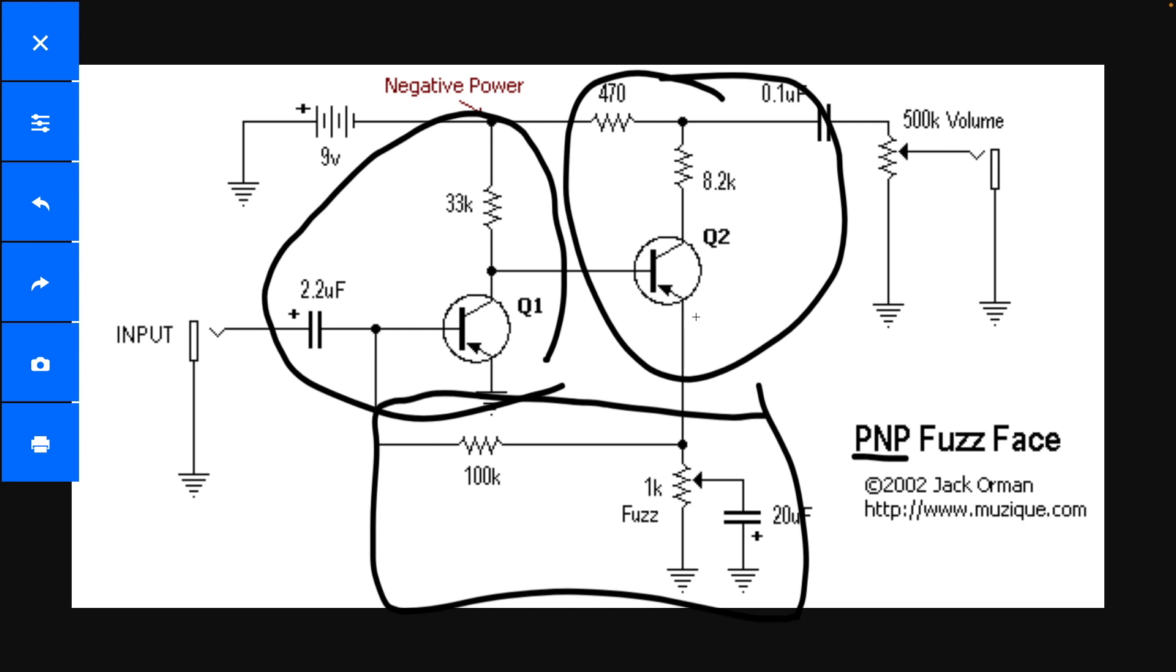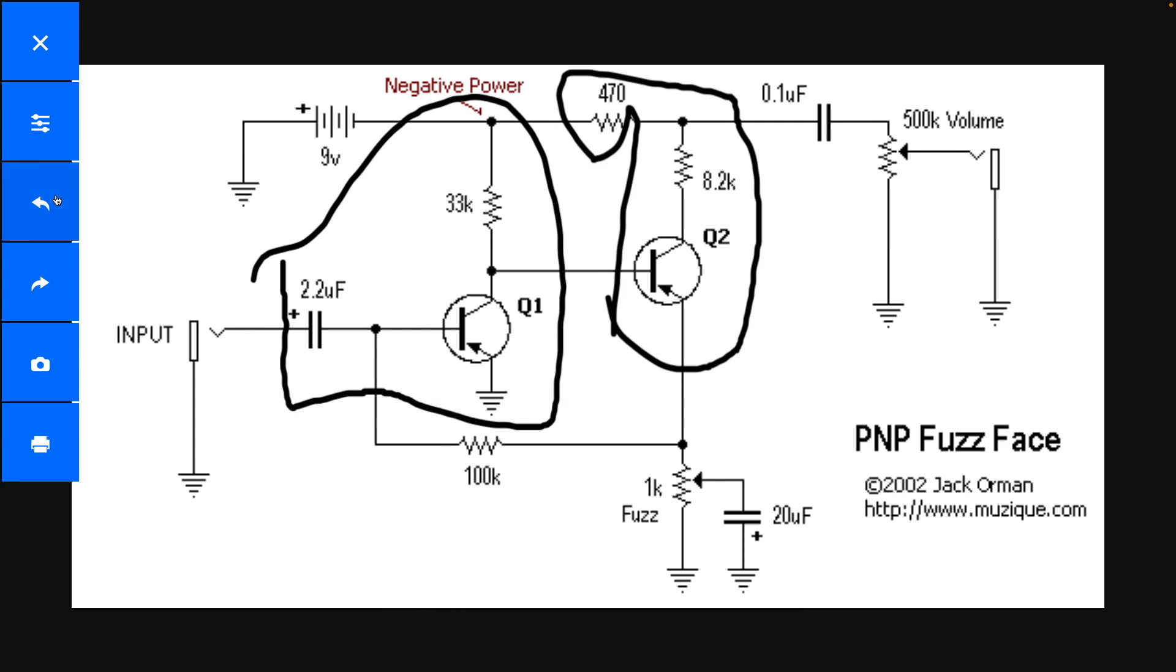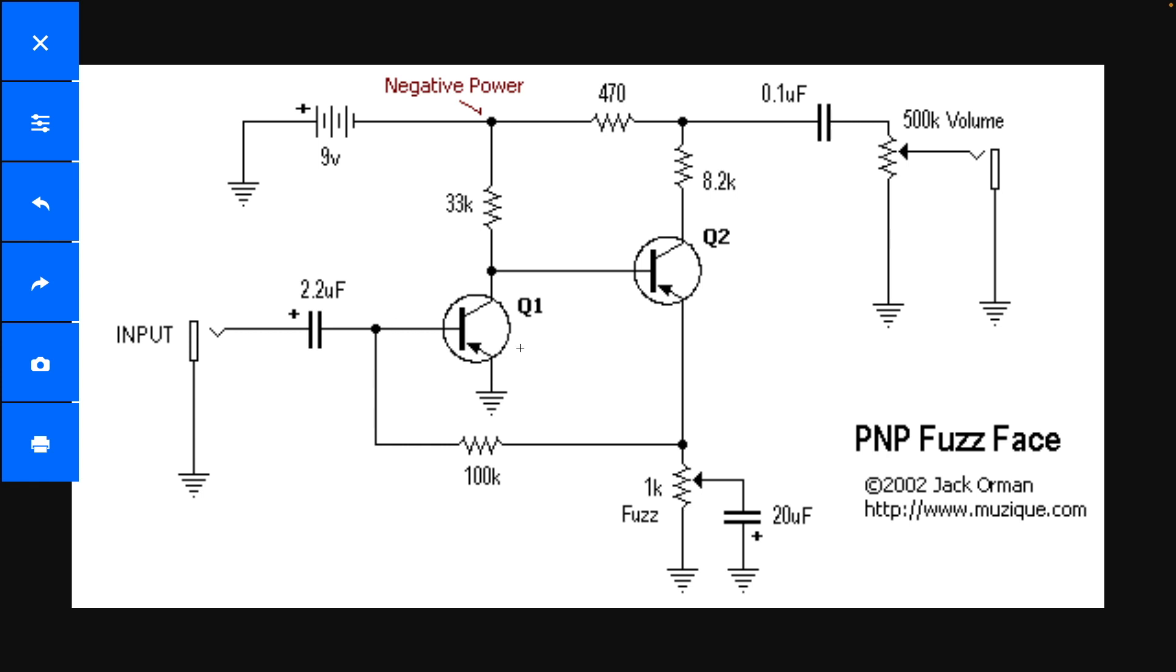You can see it's got 11 components, I think, if you're counting the jacks. So it's an incredibly simple circuit, but every part interacts with every other part. And that includes stuff that's not even in the circuit. Your guitar can affect what's going on internally. So simple, but complex circuit.